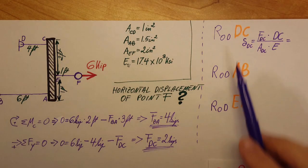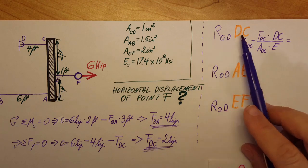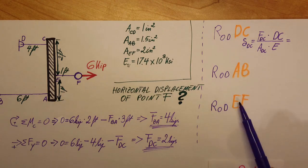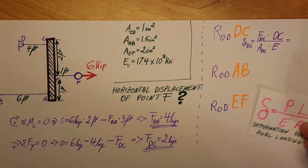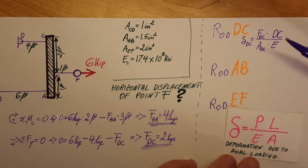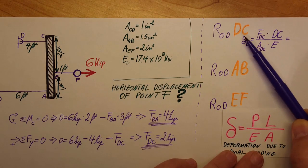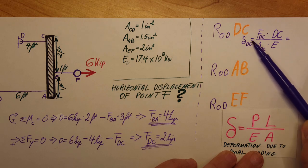Here I set up my work area for the three rods: rod DC, rod AB, rod EF. And using this formula, I'm going to set up each equation. So the deformation in DC equals